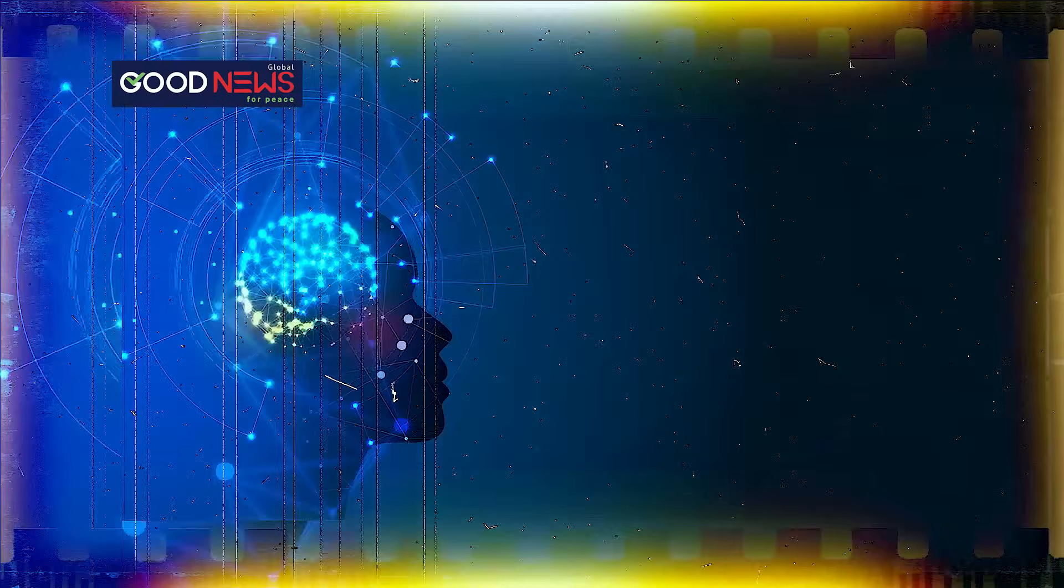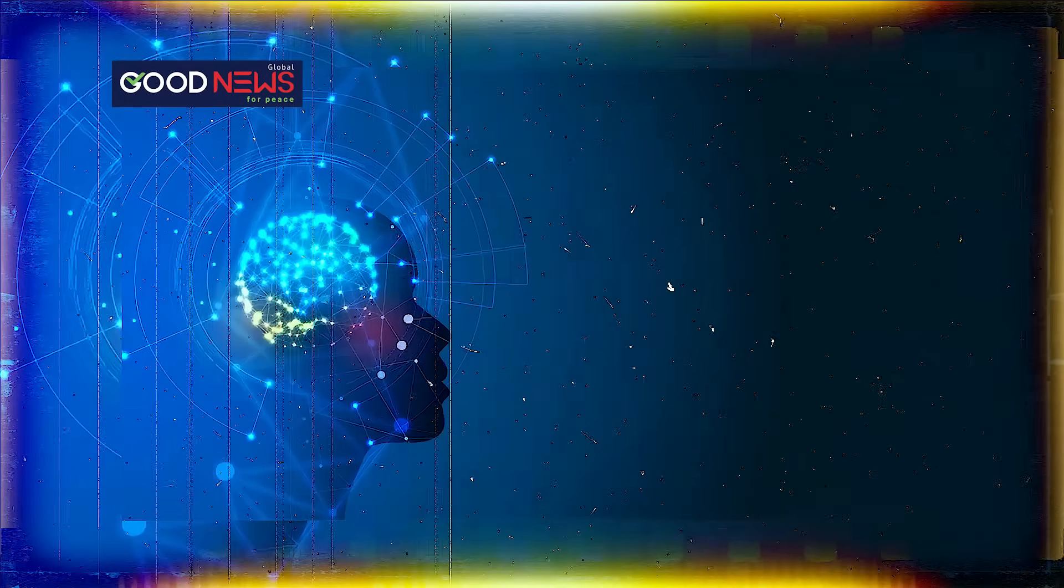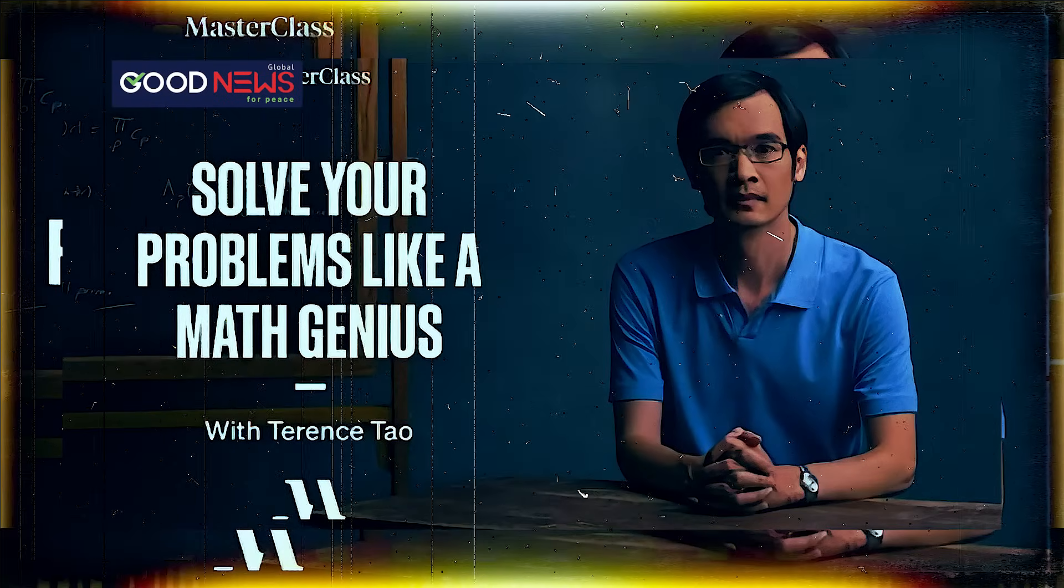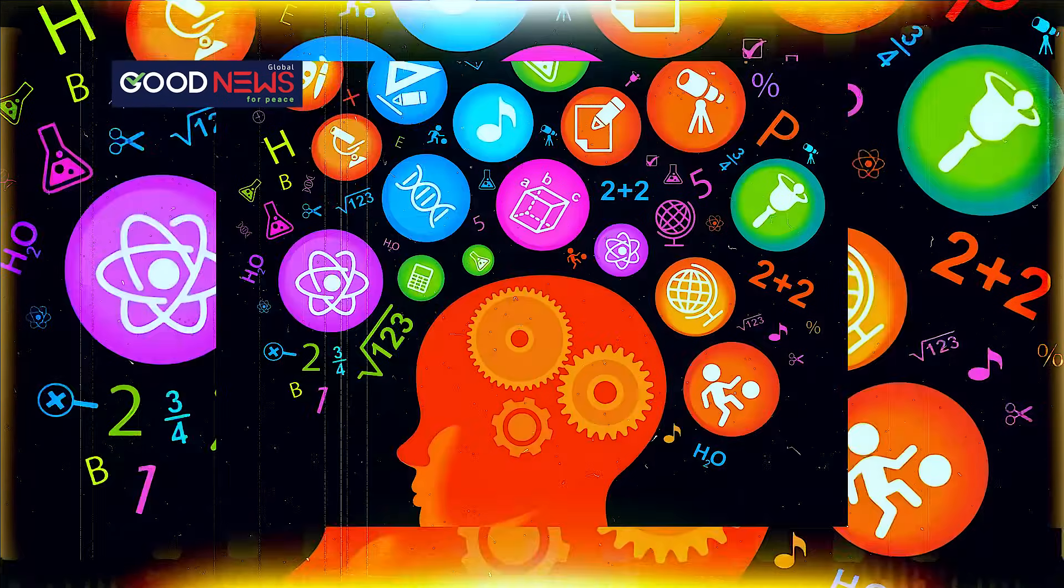One fellow mathematician summed it up best: when someone is 10 feet tall and everyone else is one foot, there's no point comparing. Terence Tao isn't just smart, he's in a league of his own.